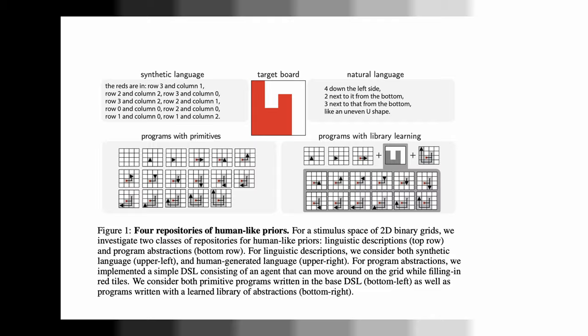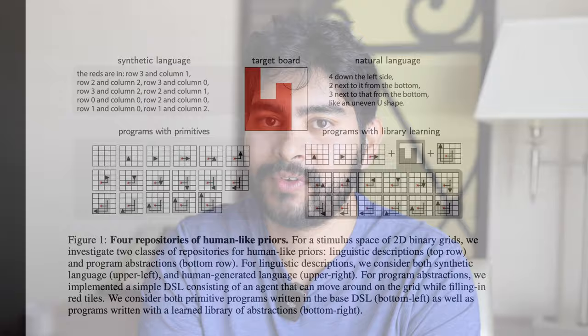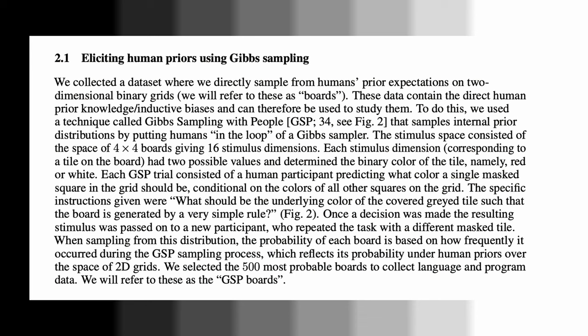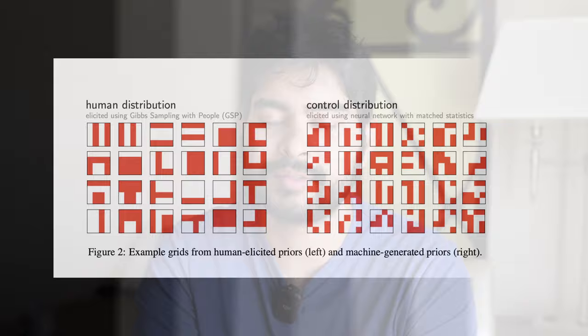To map the space of abstract concepts, they used a technique called Gibbs sampling with people — placing participants on a Gibbs sampling Markov chain where they make decisions about a grid stimulus and pass it on to another person, repeating the process until the samples reflect ground-truth human priors on these grids. As seen in Figure 2 of the paper, there is variation in the samples, but certain emergent abstract concepts are very salient to humans and persist across samples — like lines, shapes, and letters. These are the kinds of things people think about when processing two-dimensional grids.